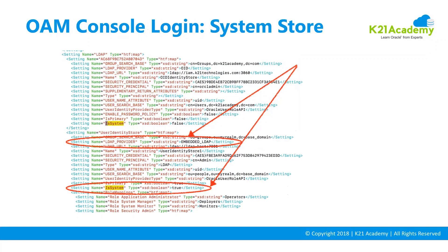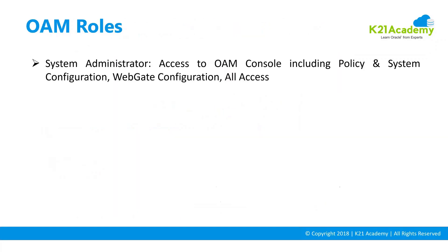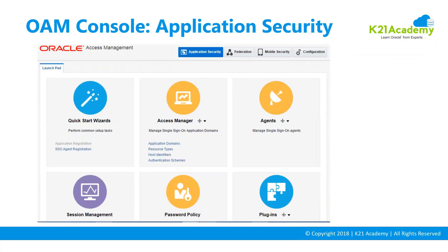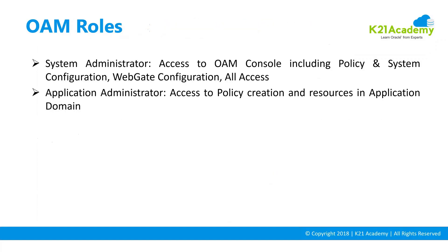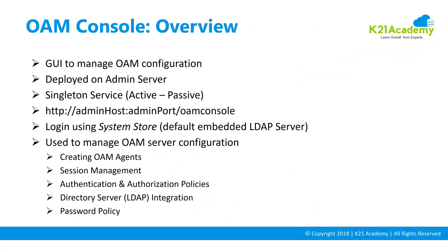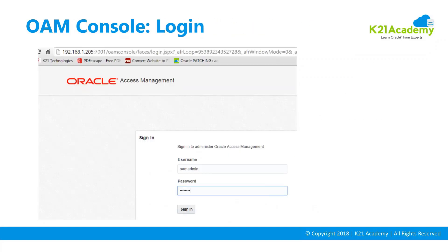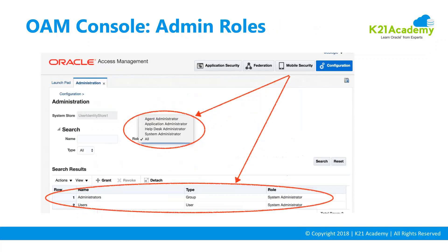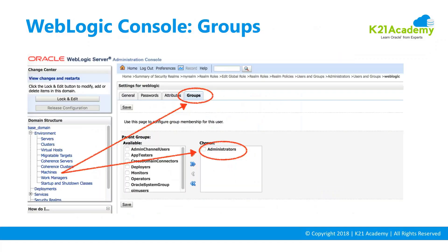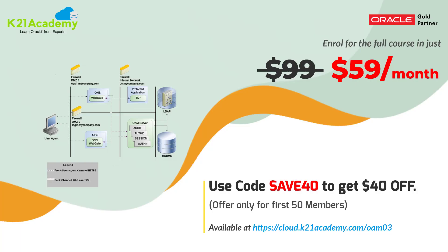This is how the login screen looks like, and this is how the landing page looks like — which is for application security and configuration. In the next lesson, we'll cover how application security looks like, how to log in, where exactly the system store is, how to identify which is the system store, as well as some admin roles. Head on to the next lesson where we look at how to log into the OAM console, view the landing page, and explore a few more functionalities.